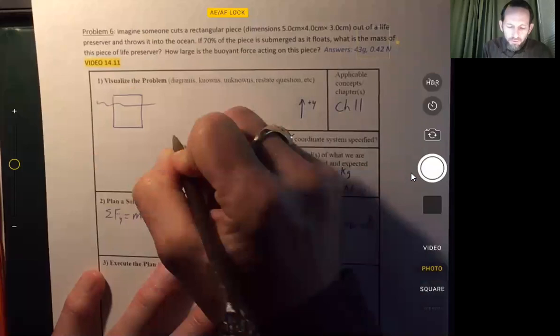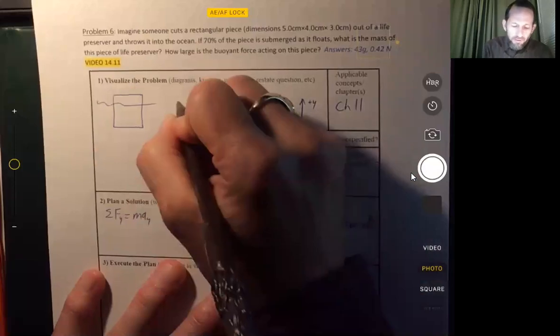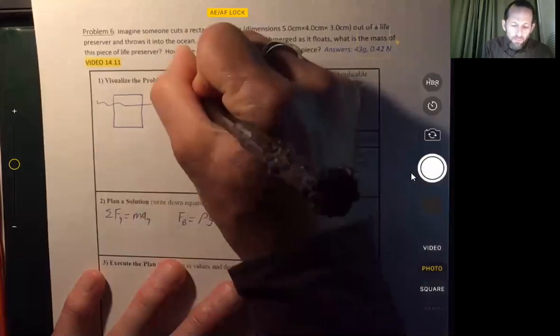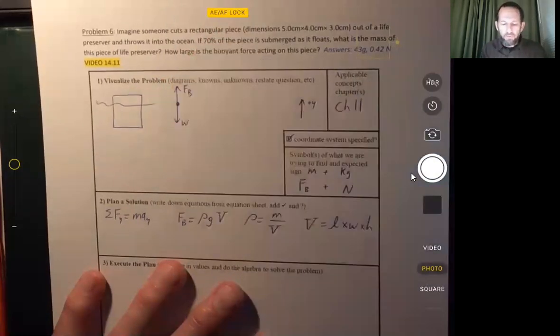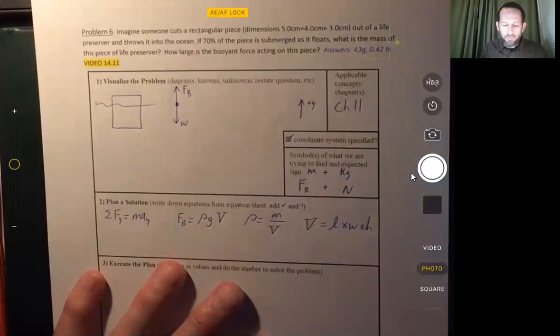And we can also draw a free body diagram. So there's a buoyant force and there's weight. Those are the only two forces because the object is floating.